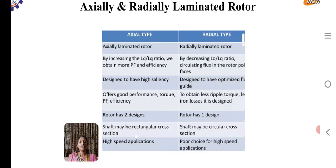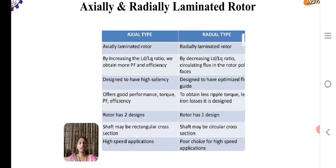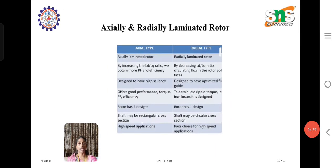Regarding LD and LQ, we have the D axis and Q axis. When input supply is given, the magnetic field will be produced along the D axis and Q axis. When the rotor rotates, it produces a flux and the flux will be cut, producing the reluctance value. Within axial type, the direct axis inductance and quadrature axis inductance ratio — when we increase the inductance value, we can obtain more power factor and efficiency. Whereas in radial type, by decreasing the value we can obtain more flux. This is the main difference between axial and radial type.